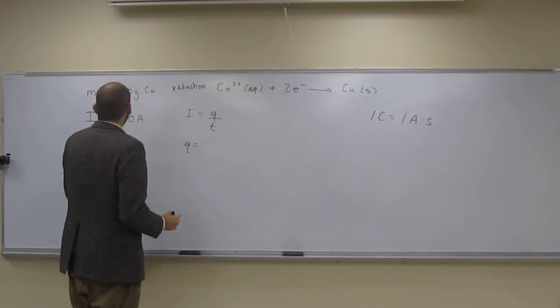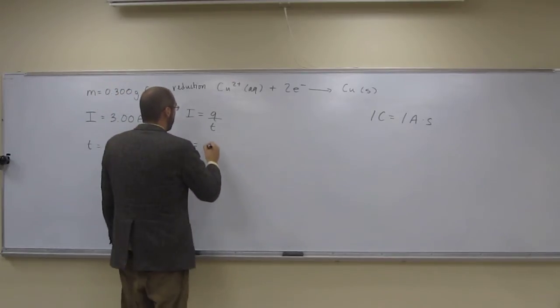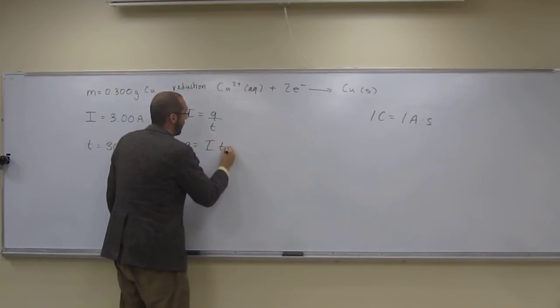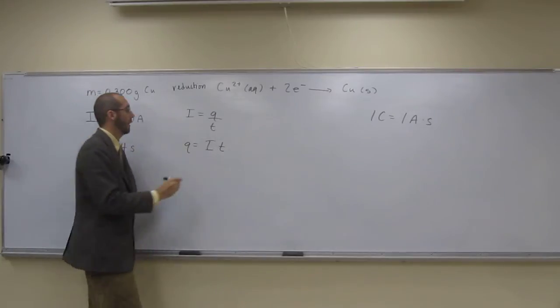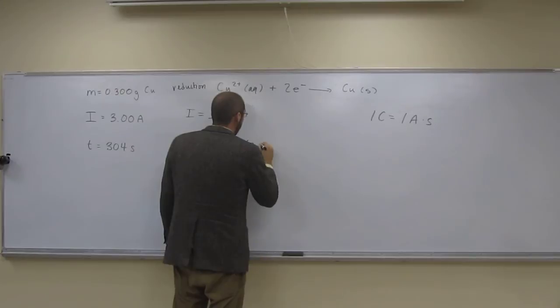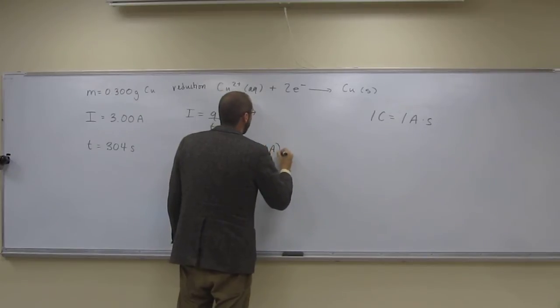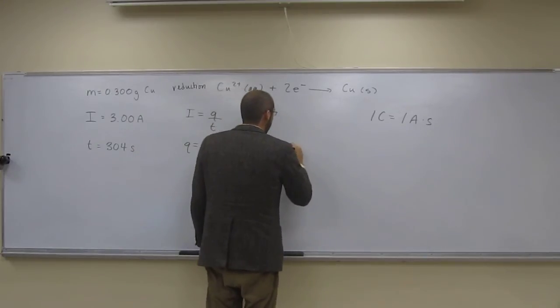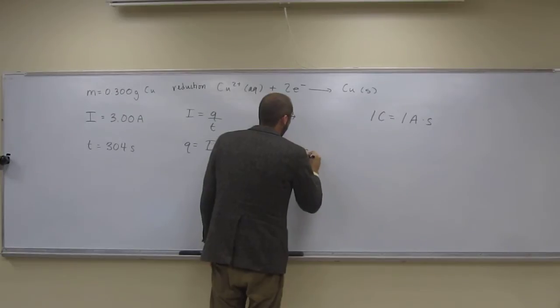So what do we got here? Q equals IT, like that. I, 3.00 amps, times T, 304 seconds.